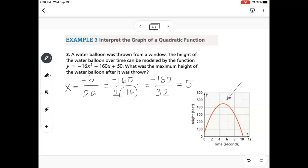So we can see on our graph here that clearly that is the x-coordinate of our vertex. So at 5 seconds is when the water balloon reaches its maximum height, and then we want to figure out what is that maximum height.